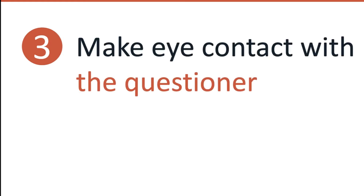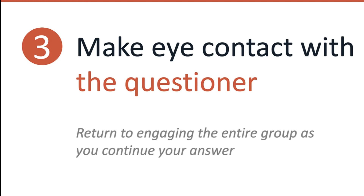Delivery element number three: make eye contact with the questioner as you start your answer, and then give your attention to the broader audience. It's important that you return to engaging the entire group as you continue with your answer, because even though one person asks the question, the answer is valuable to the entire audience or many people in the audience. Politicians do this at town hall meetings — Bernie Sanders and John McCain are great examples.